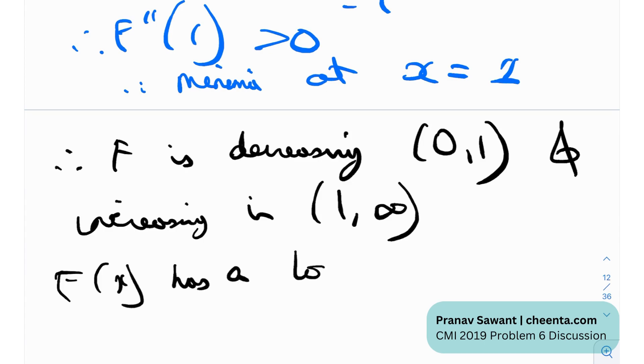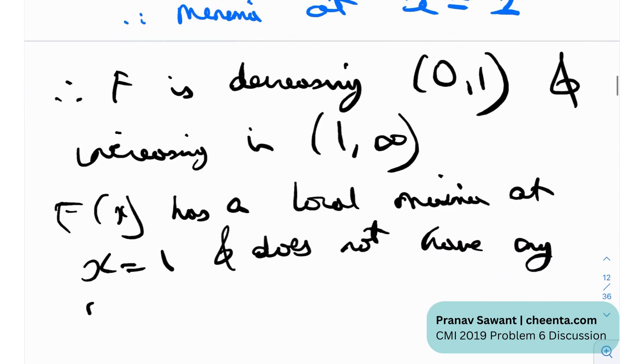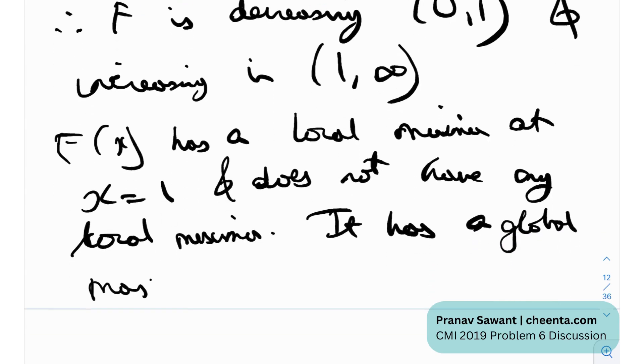So we can just say that from this second derivative test that we just performed, f of x has a local minima at x equals to one but does not have any local maxima. It does not have any local maxima as we had seen from the derivative test. But we can say that it has a global maxima. It has a global maxima, it does not have a local maxima it has a global maxima.